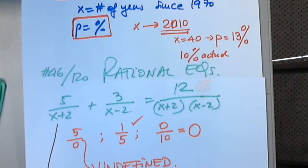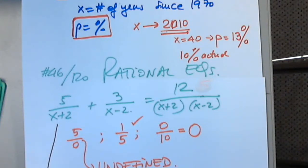Writing restrictions on x is very important. Your book does not require you to write restrictions on x, but I highly recommend it — and you'll see why in a minute.